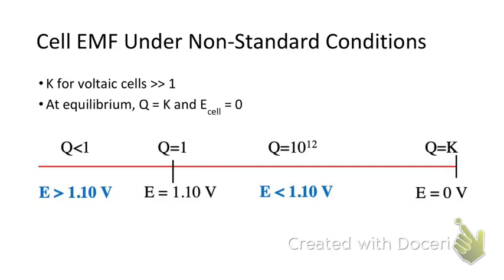But what if we're under non-standard conditions where the molarities are greater than or less than one? In order to determine what effect that's going to have on the voltage of the cell, we have to know a couple things first. K for voltaic cells is always much, much bigger than one — it can be as high as 10 to the 20-something power, all the way up to 10 to the 60-something power. They're very large numbers, because these are by definition spontaneous reactions. Under standard conditions we have Q equal to one, and under equilibrium conditions we have Q equal to K. At equilibrium, the cell voltage is zero.